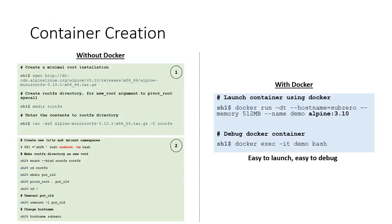A big reason for containers' popularity can be attributed to Docker. Docker created a CLI to launch containers without effort. To compare the difference, let's revisit the container creation code used in the first half of this lecture. We created the file system for the sample container by downloading the root file system for Alpine Linux from a source, then populated a rootfs directory on the host with the contents of the downloaded zip file.